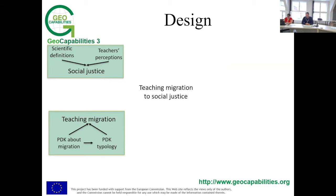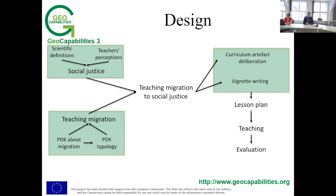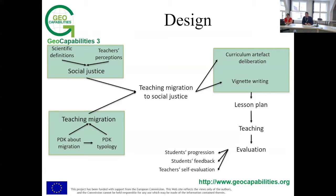After selecting the most suitable knowledge to be included in their teaching, the curriculum artifact deliberation and vignette writing took place, which was a basis for the lesson plan that each teacher prepared. Then the teaching took place, and then the evaluation. This last step — the evaluation — is our interest in this presentation. It is structured according to the phases of the project: the planning, the teaching, and the evaluating. The evaluation focused on student progression, student feedback on the teaching process, and teacher self-evaluation of their whole story in the project.